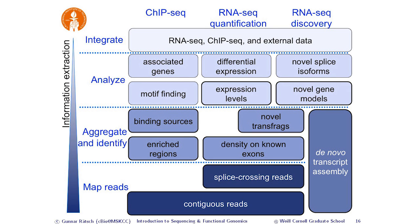There are different stages in the analysis. The first is the mapping stage: you have either contiguous reads that match directly to the genome, or spliced reads that go from exon to exon with a gap in between. Then you need to aggregate and identify pieces — in RNA-seq, identifying where an exon is, where a gene begins and ends; in ChIP-seq, where a binding site is. Next you find motifs, determine expression levels, look at differential expression, find new genes, and eventually integrate these different pieces to build a joint model.